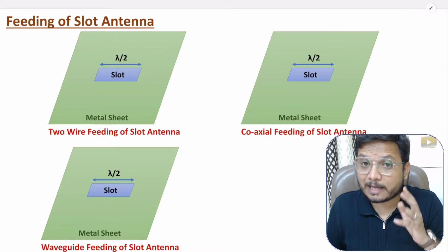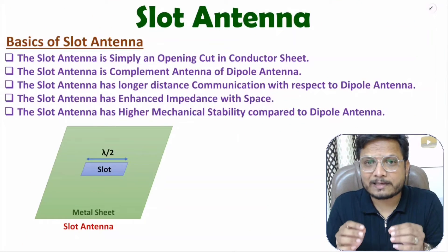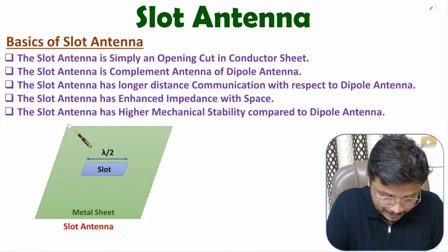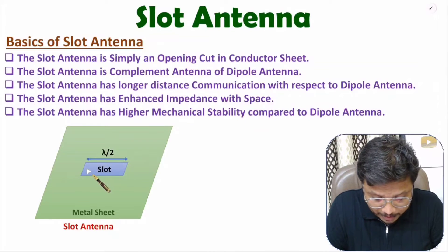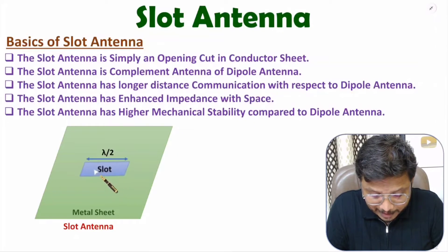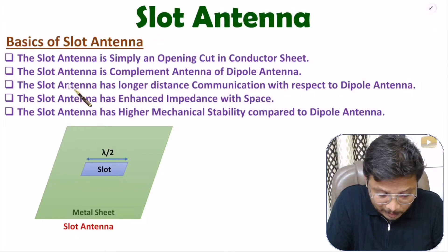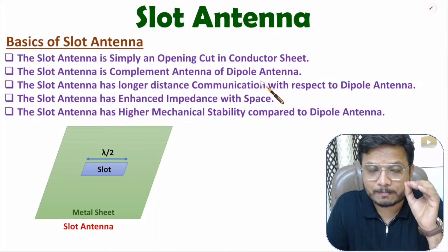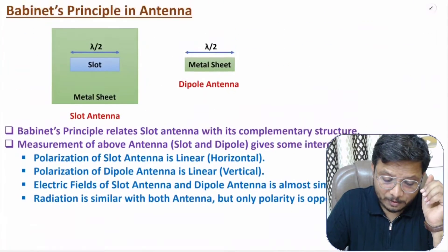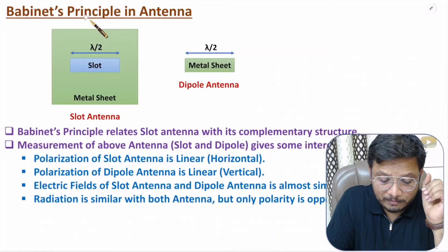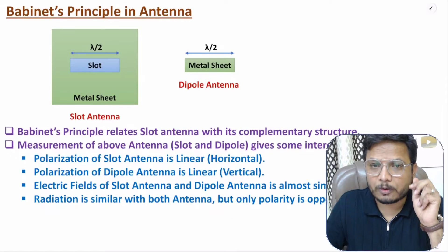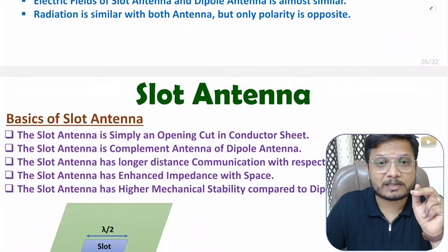Slot antenna is simply an opening cut in a given metal sheet. As you can observe in this structure, we have an opening cut in the metal sheet — that is the slot — and the length of this slot is lambda by 2. Slot antenna is the complementary antenna of dipole antenna. In my last video I explained Babinet's principle, showing how the dipole is the complementary of the slot.